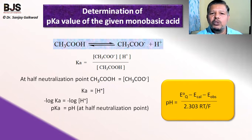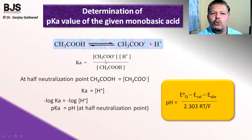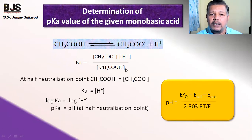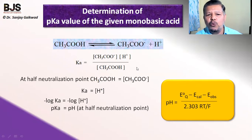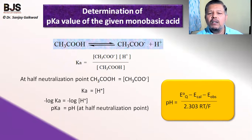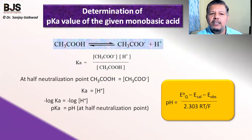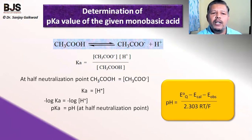We know that acetic acid dissociates into acetate ion and hydrogen ion. The equilibrium constant Ka equals the concentration of acetate ion multiplied by the concentration of hydrogen ion, divided by the concentration of acetic acid present in the solution. To measure the pKa value, we have to measure the half neutralization point from the graph. At the half neutralization point, the pH equals the pKa value of the monobasic acid.